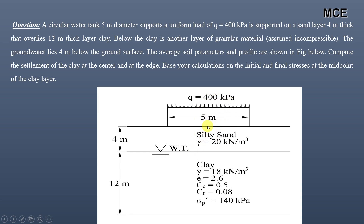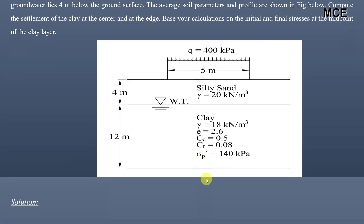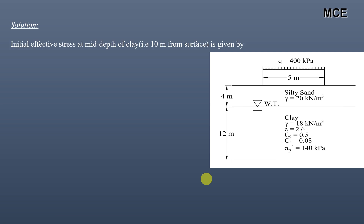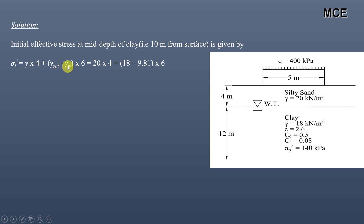We need to find the settlement at the center and at the edge at the mid-depth of the clay layer. First, we find the initial effective stress at mid-depth of the clay layer. Mid-depth is 4 m plus half of 12 m = 6 m, so 10 meters from the surface. Initial effective stress = γ × 4 + (γ_sat − γ_w) × 6 = 20×4 + (18−9.81)×6 = 129.14 kilo Pascal.